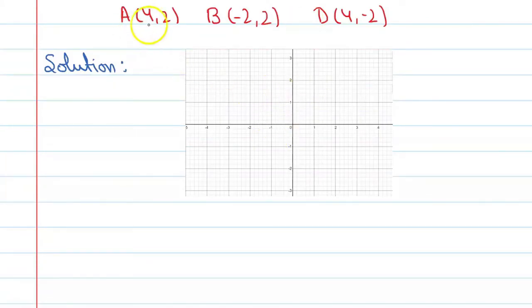And first point is A, which is 4,2. So this is 4 and 2. First point is this one. And here we can say this is A. Now the second point is B, which is -2,2. So where is -2,2? This is -2 and this is 2. So this is the second point. We can say it is B, this point.